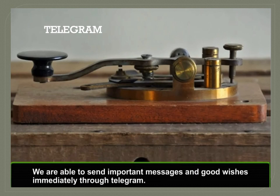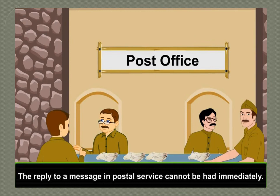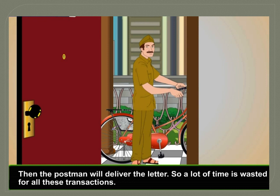The next means of communication is telegram. We are able to send important messages and good wishes immediately through telegram. Telegrams can be received in a very short period of time. The reply to a message in postal service cannot be had immediately. The person to whom the letter is sent has to take another letter to reply, and the postman will deliver it, so a lot of time is wasted for all these transactions.